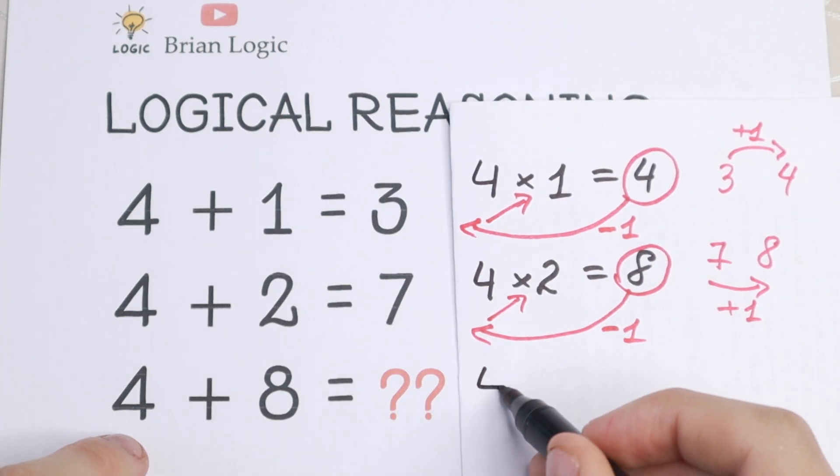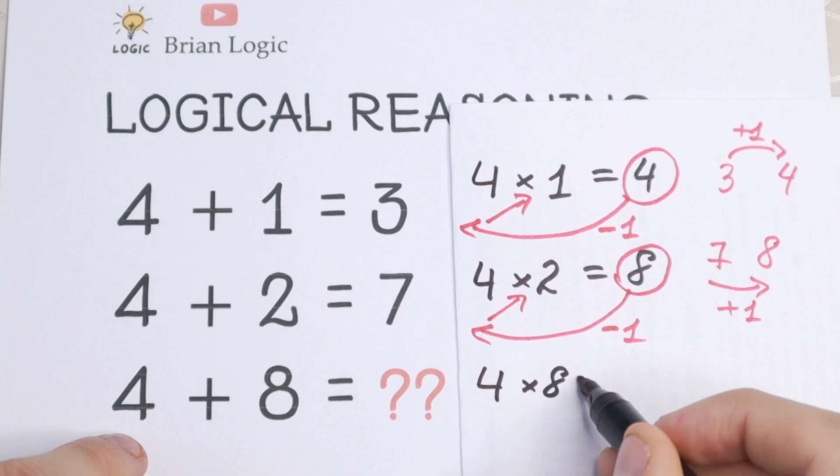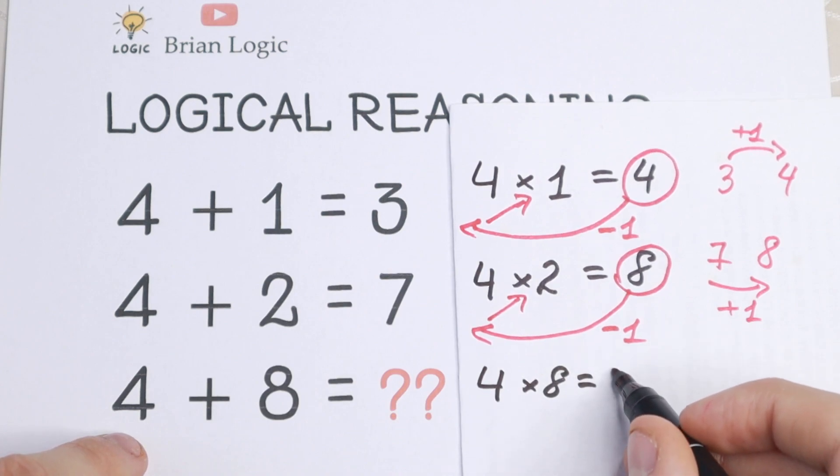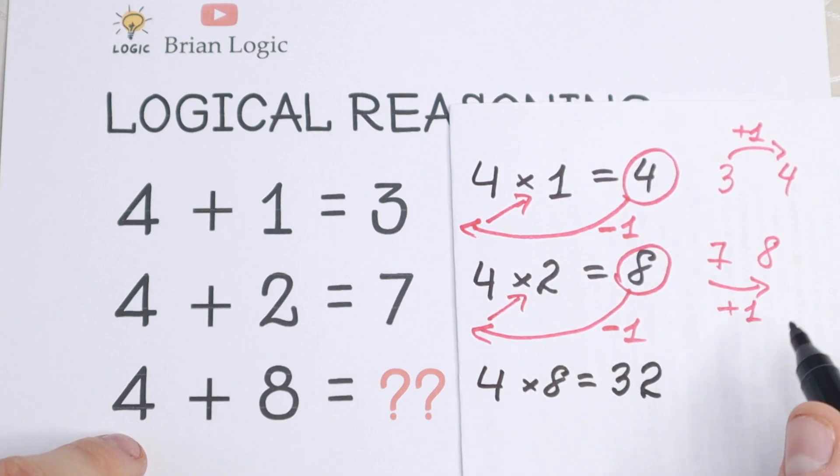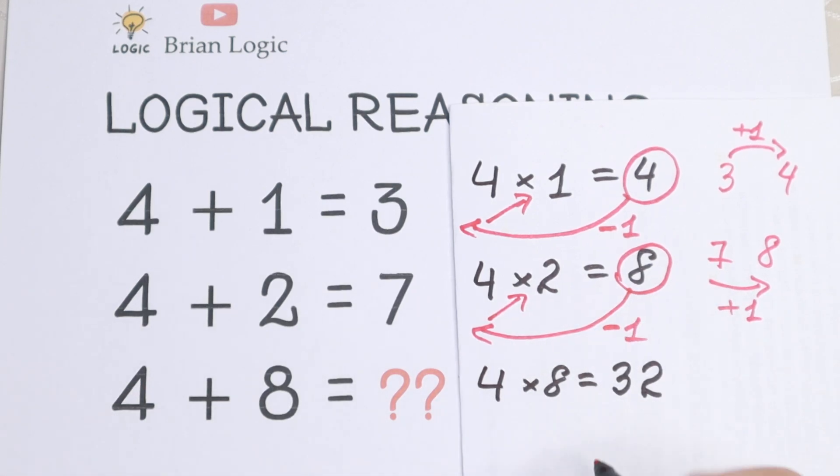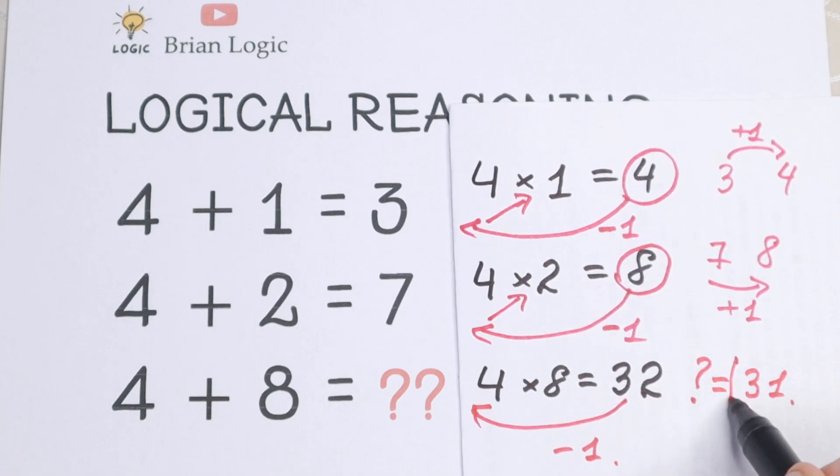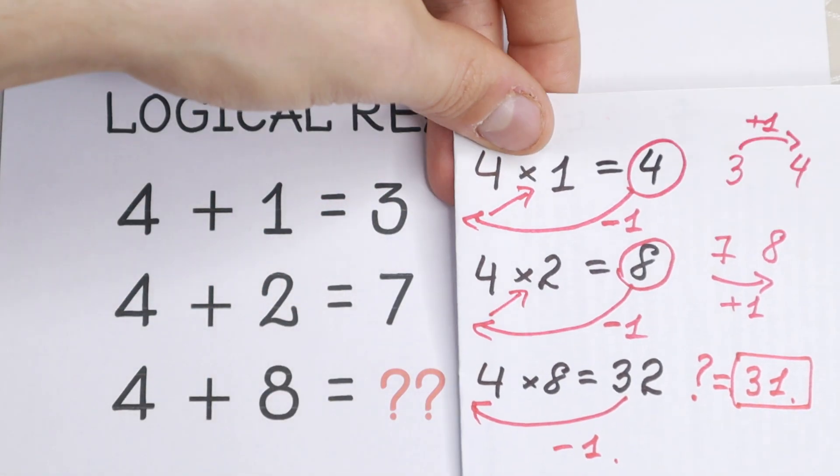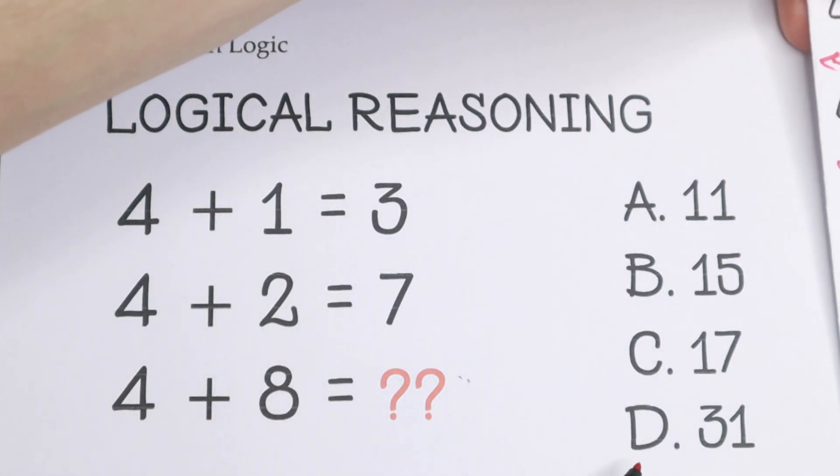Firstly, multiplication: 4 times 8, it will be equal to 32. And of course, as you can see, we subtract 1 to get these numbers. So if we subtract 1 from here, we will have 31. And this is my approach, this is my solution. And if we are talking about an option, we will have option D.